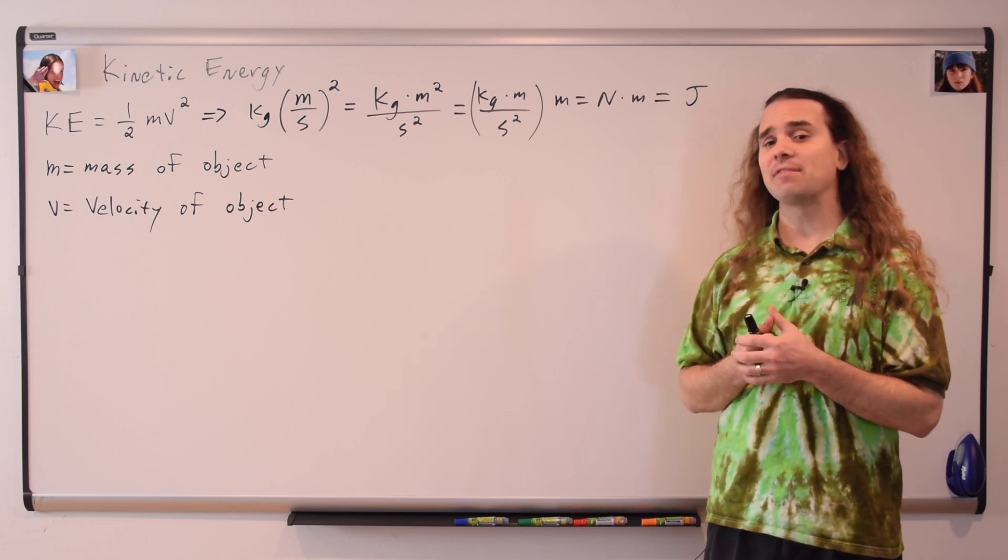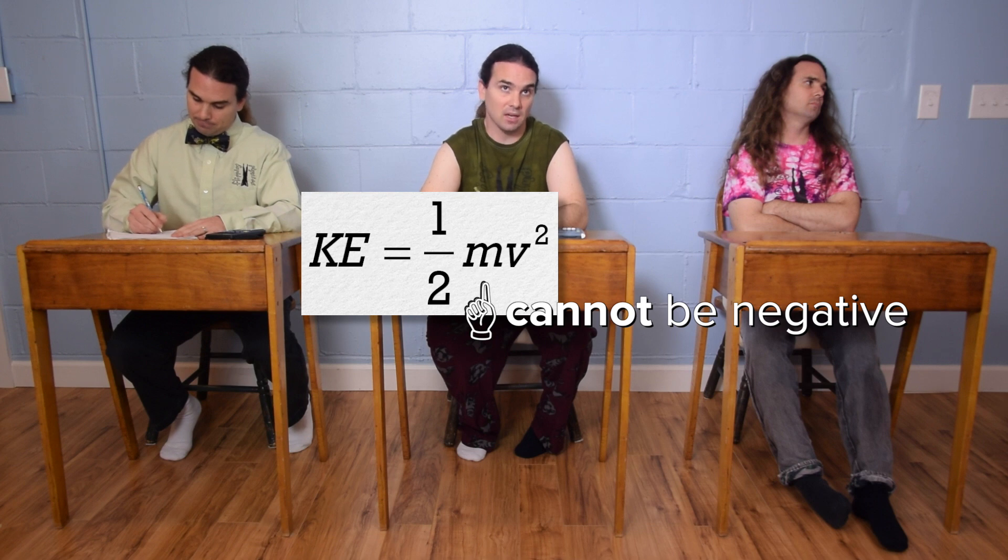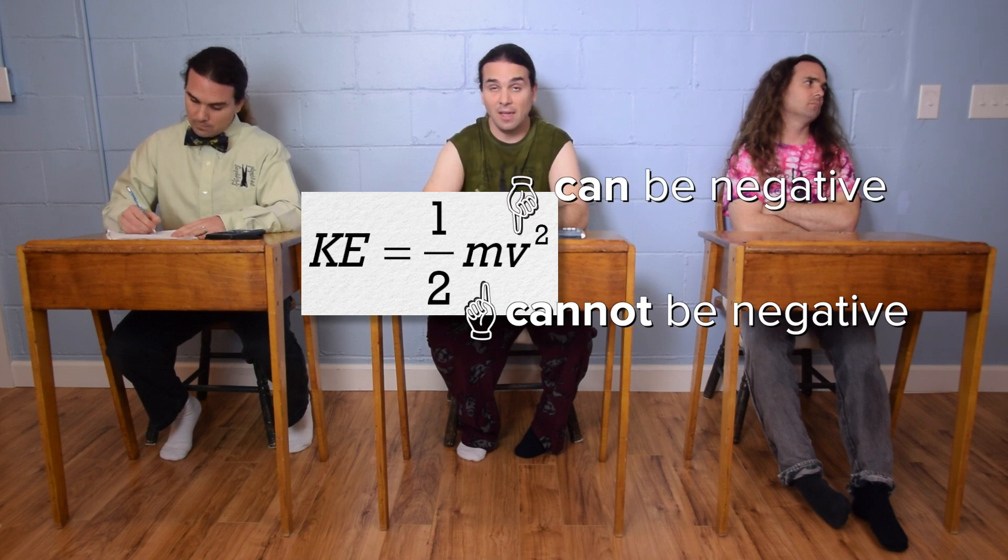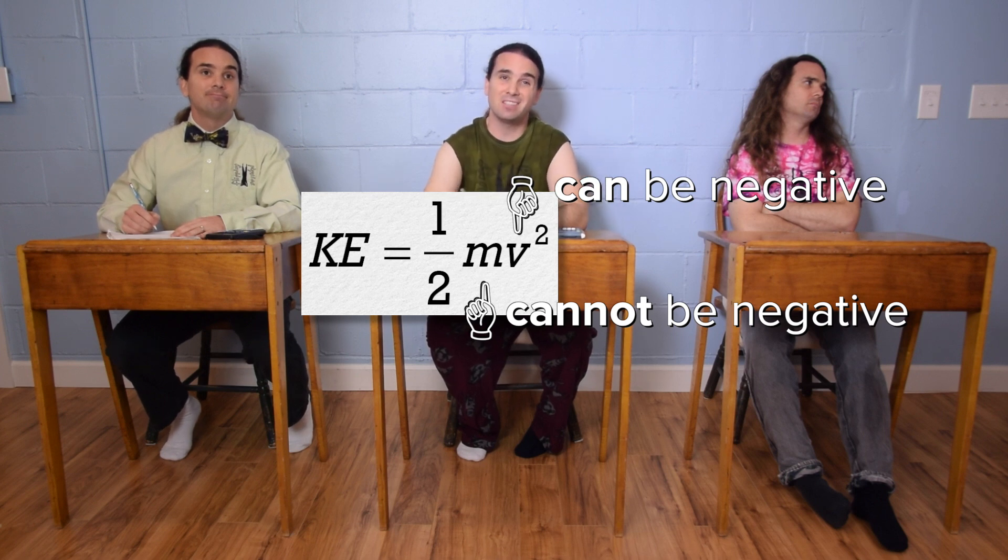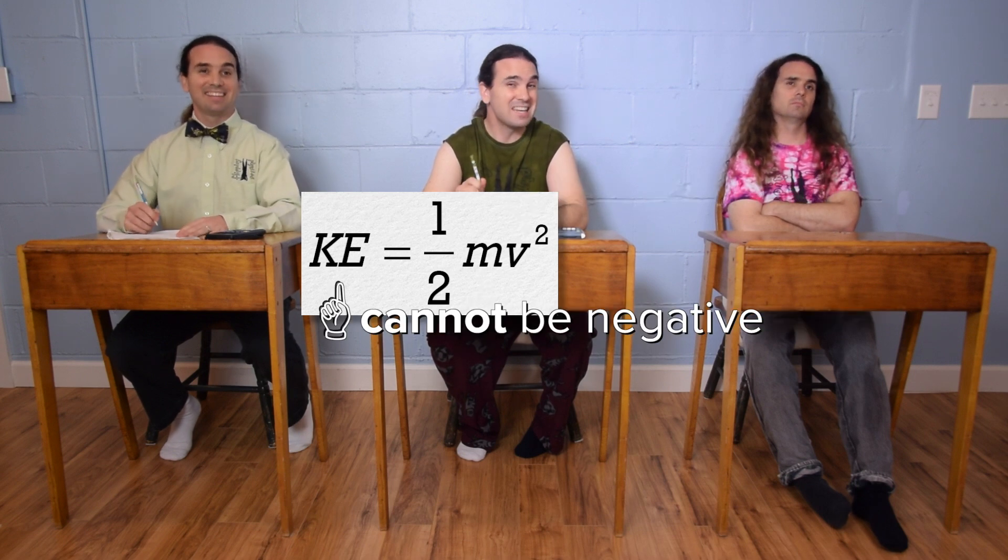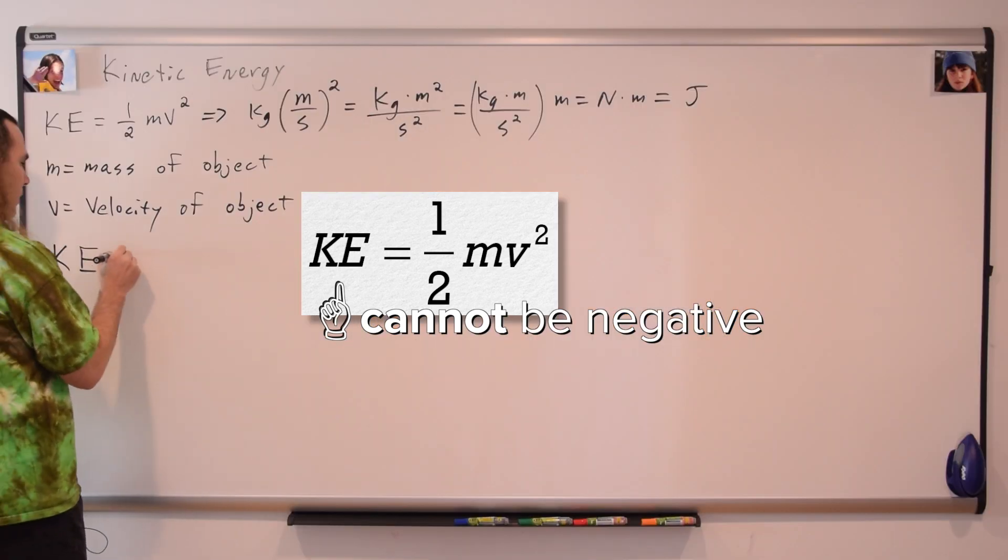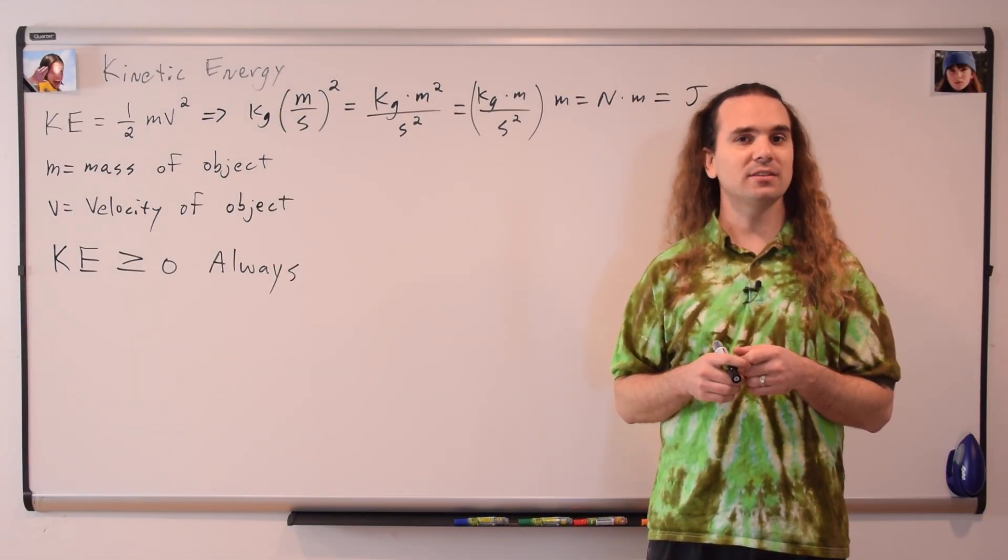Bobby, can kinetic energy ever be negative? Well, mass cannot be negative, but velocity can be negative. Oh, but velocity is squared in kinetic energy and the square of a negative number is always positive, so kinetic energy can never be negative. Also, kinetic energy, just like work, is a scalar.